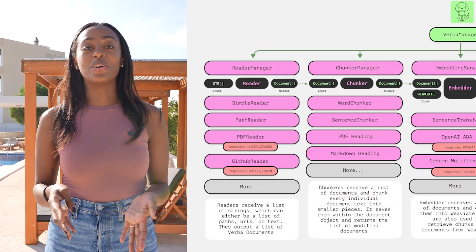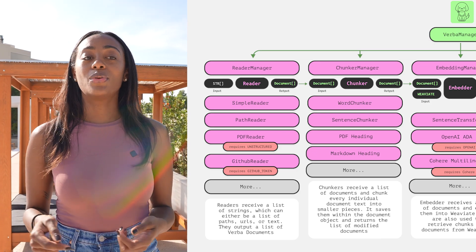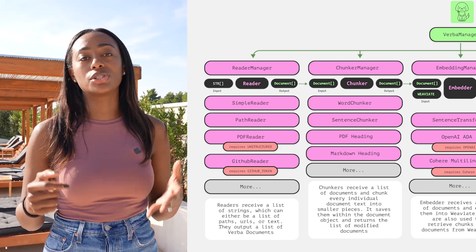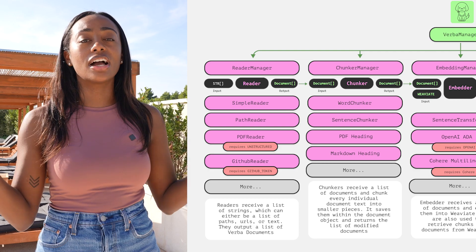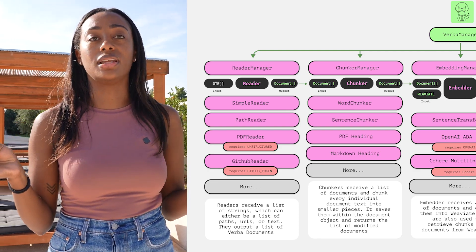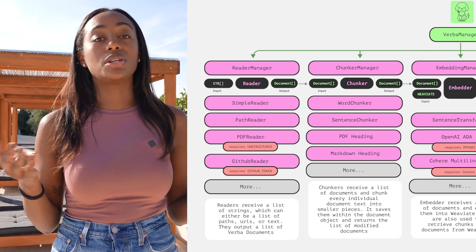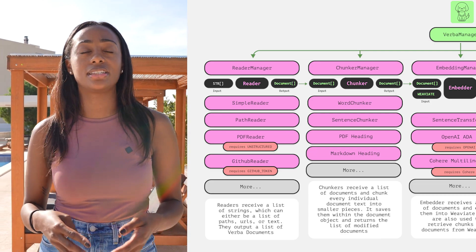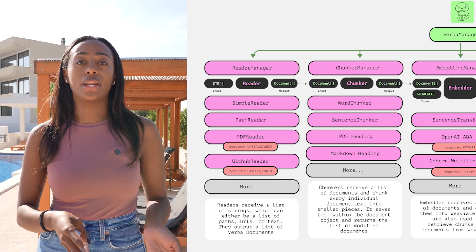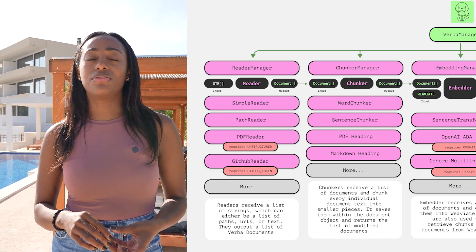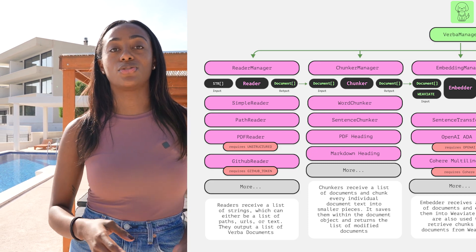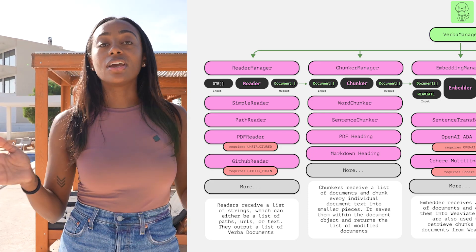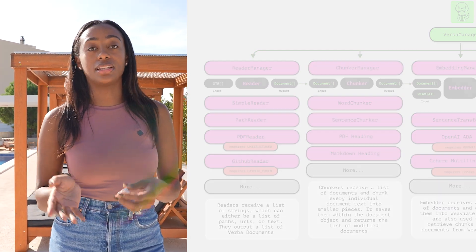Now I'll jump over to the chunker manager. What this is doing is ensuring that Verba is retrieving the right context and not going over the token limit. So depending on the model that you're using — because we are modularized — right now we're using OpenAI but we'll eventually allow you to use the sentence transformers model.